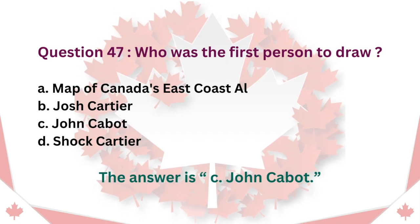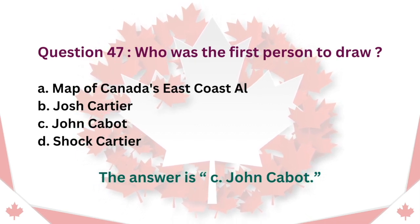Question 47: Who was the first person to draw a map of Canada's east coast? A. John Cabot. B. Jacques Cartier. C. John Cabot. D. Jacques Cartier. The answer is C. John Cabot.